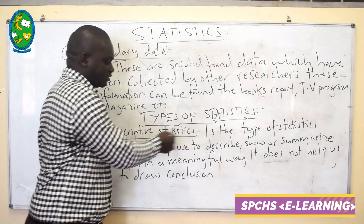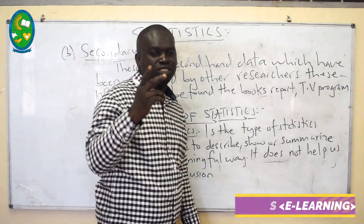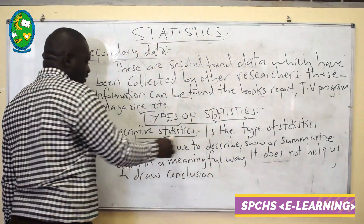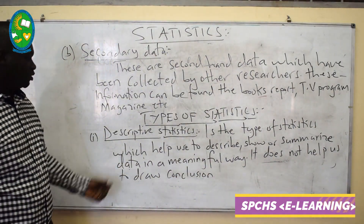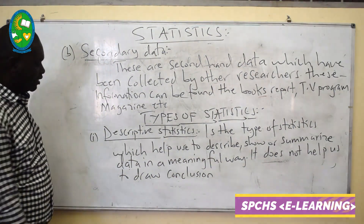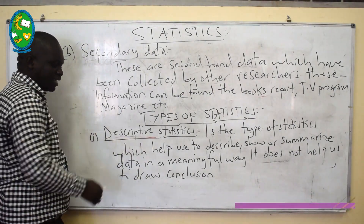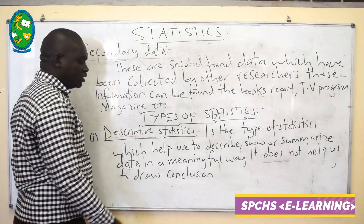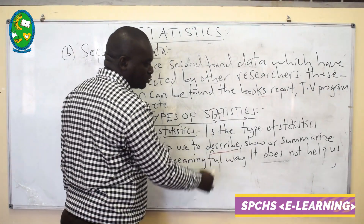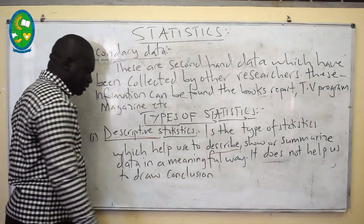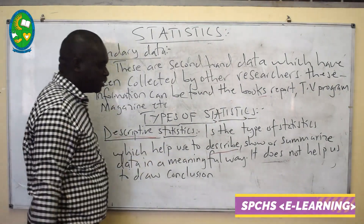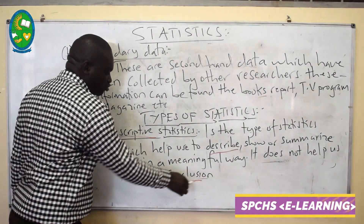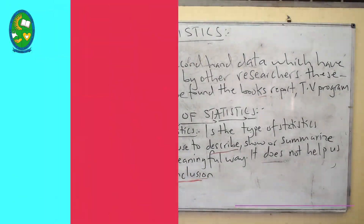We also have types of statistics. Normally we have two types. The first type is called descriptive statistics. Descriptive statistics is a type of statistic which helps us to describe, show, or summarize the data in a meaningful way. It does not help us to draw conclusions — you cannot draw conclusions using descriptive statistics.